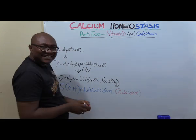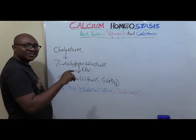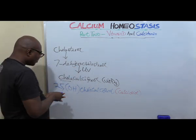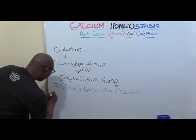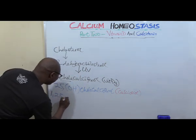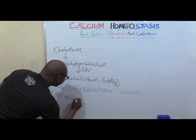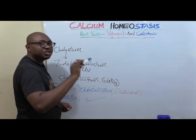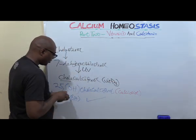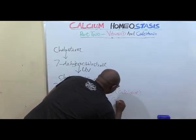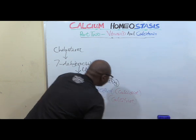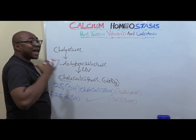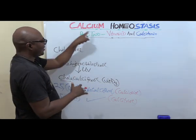Then, in the kidneys, another hydroxylation takes place at the first position. That now makes it 1,25-dihydroxycholecalciferol, which is also known as calcitriol. So that is it — calcitriol is the active form of vitamin D that has hormonal effects helping in calcium homeostasis.